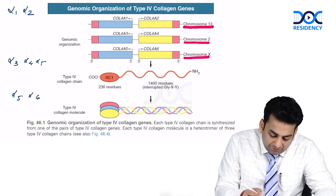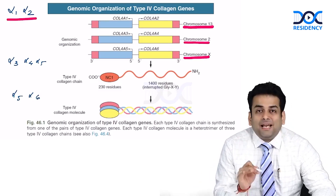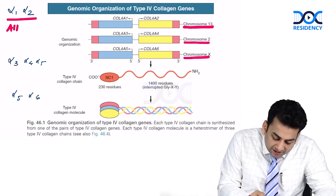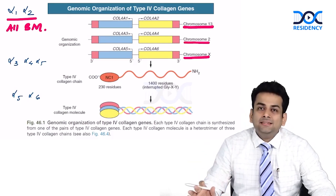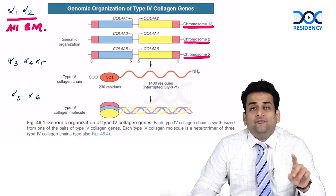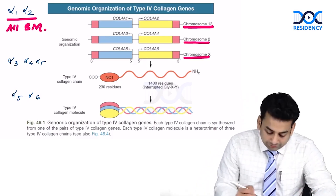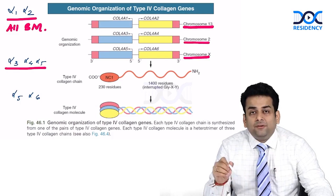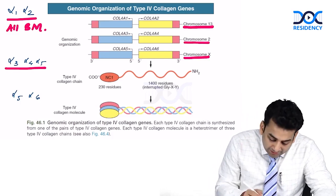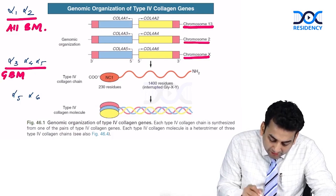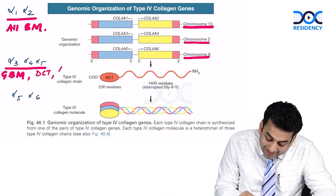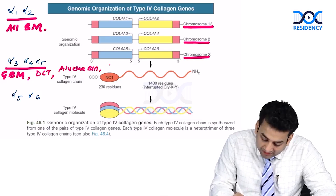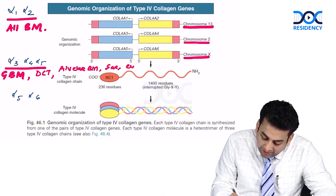The alpha 1 and alpha 2 network is primarily present in all basement membranes — almost all basement membranes contain alpha 1 and alpha 2 chains of collagen IV. The alpha 3, alpha 4, and alpha 5 chain network is present primarily in the GBM, in the distal tubule, in the alveolar basement membrane, and in the ear and eye.